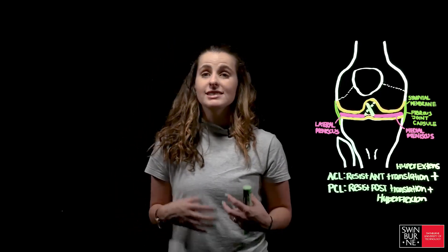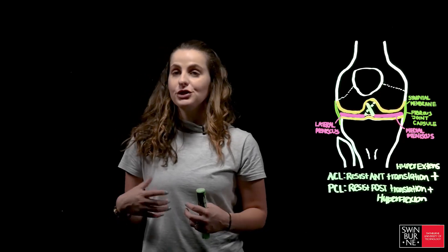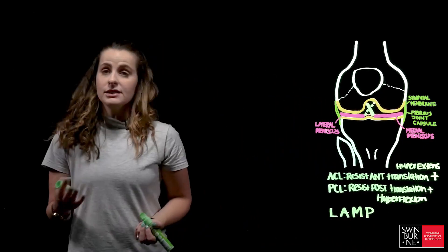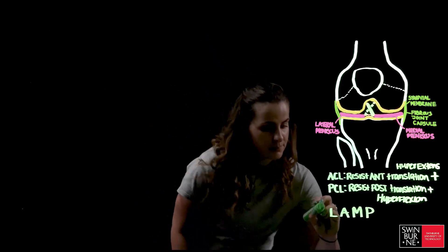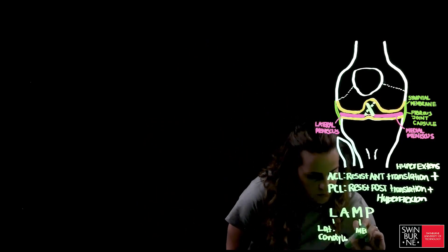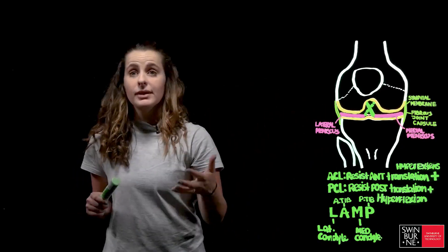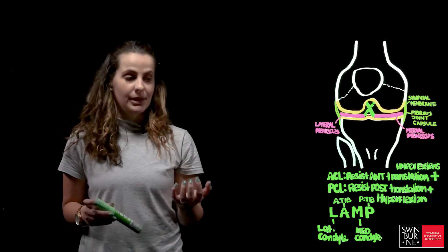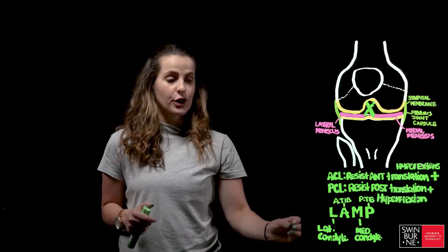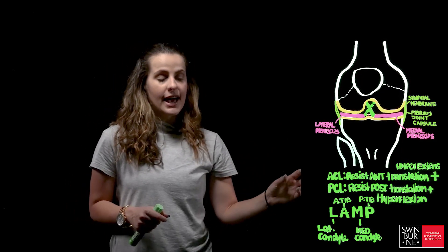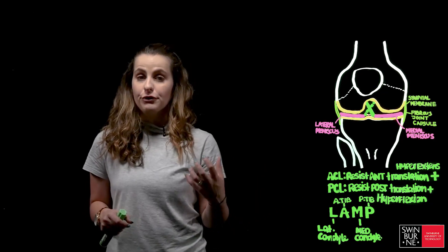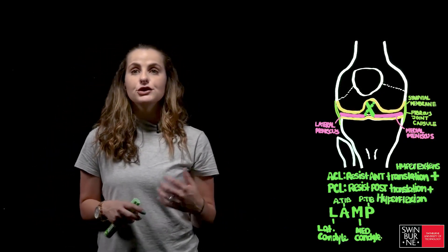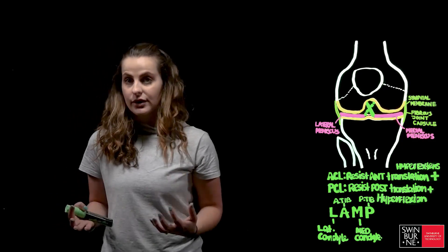A useful way to remember the attachments of both cruciate ligaments is using the mnemonic LAMP. L refers to the lateral condyle, M refers to the medial condyle, and ANP refers to the attachment points on the tibia. The anterior cruciate ligament courses from the anterior part of the tibial plateau and attaches to the lateral condyle of the femur. In contrast, the posterior cruciate ligament originates from the posterior aspect of the tibial plateau and inserts onto the medial condyle of the femur.